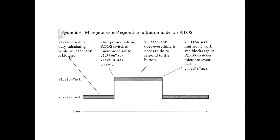The button task is unblocked only if some user presses the button. If no one has pressed the button, this task will not execute at any time — it is a blocked task, because it is waiting for something to happen. So: the level task is in running state, and the button task is in blocked state, as shown by the gray area. The arrow shows that the level task is busy calculating the tank level while the button task is blocked, waiting for a button press.